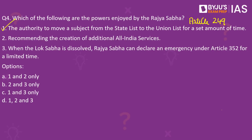As per Article 249, Rajya Sabha can pass a resolution with a majority of not less than two-thirds of members present and voting to move a subject from the state list to the union list. This remains for one year and can be extended by one year at a time by a similar resolution. The second statement is also correct — the Rajya Sabha enjoys the power to recommend the creation of additional All India services under Article 312. The third statement is also correct — Rajya Sabha can declare an emergency under Article 352 for a limited time when the Lok Sabha is dissolved. The correct answer is option D — 1, 2 and 3.